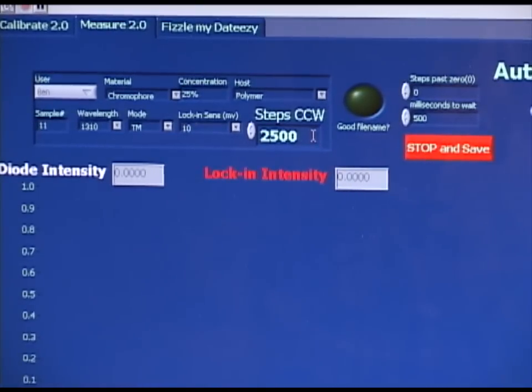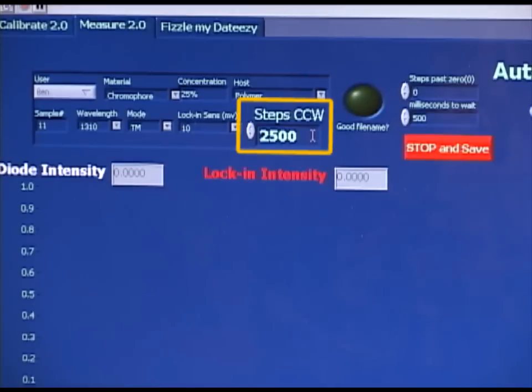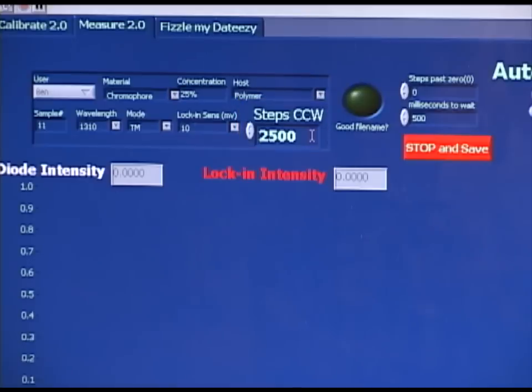In the lower right-hand corner of the information box, we can see a box labeled Steps Counter-Clockwise. This tells the stage motor how many microsteps to move beyond the zero point. If during the calibration process we find modes at very high angles, it may be necessary to increase this number. Often we increase it to a number as high as 2850 microsteps. However, a more standard number is 2500 microsteps.